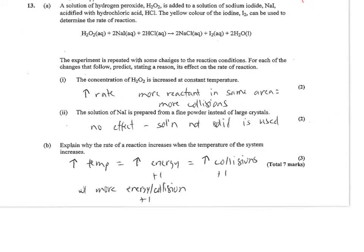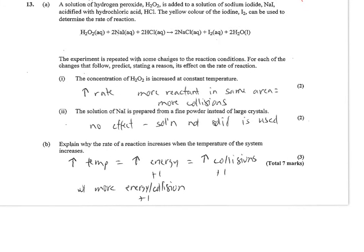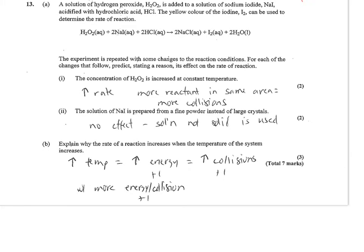Number 13, you have a solution of hydrogen peroxide and sodium iodide. The yellow color of iodine can be used to determine the rate. The experiment is repeated with some changes. Part i: the concentration of H2O2 is increased at constant temperature. So we've got more H2O2. That is going to increase the rate. Why? Because we have more reactant in the same area, which means more collisions.